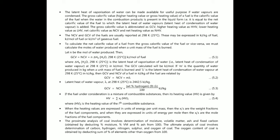The proximate analysis of coal involves determination of moisture, volatile matter, ash, and fixed carbon. The ultimate analysis of coal involves determination of carbon, hydrogen, nitrogen, sulfur, and oxygen. The oxygen content is obtained by deducting the sum of the percentages of all other elements from 100.